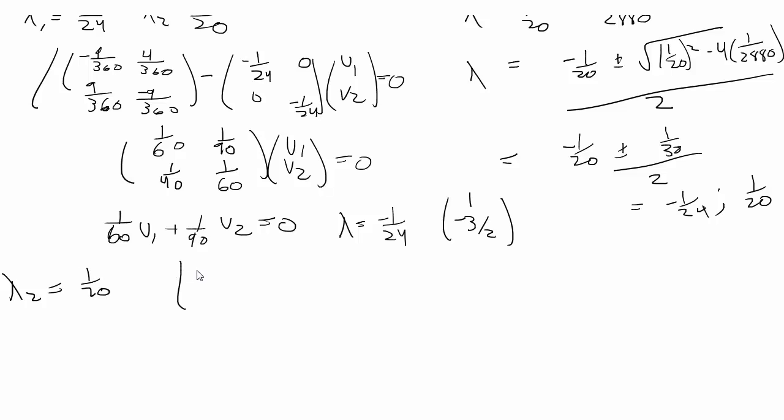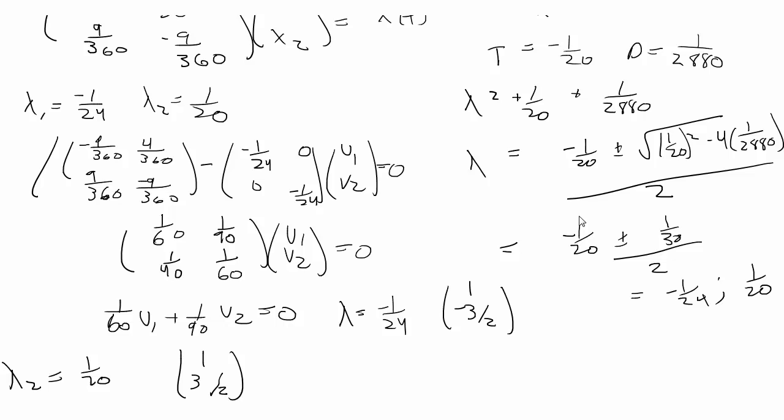And I'm going to skip showing that, but it's basically the same thing, and you're going to get 1 over 1 and 3 halves. Okay, so I just realized I cannot read my own handwriting. This obviously is wrong. It's supposed to be negative 1 over 120, so it's not 1 over 20.